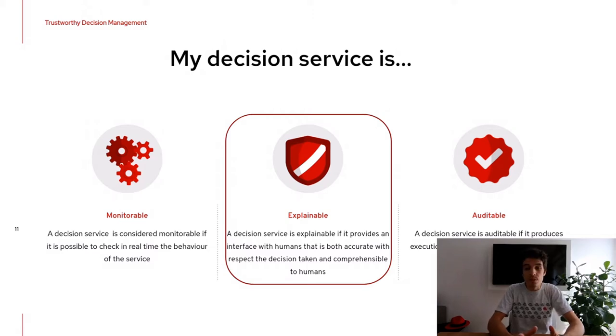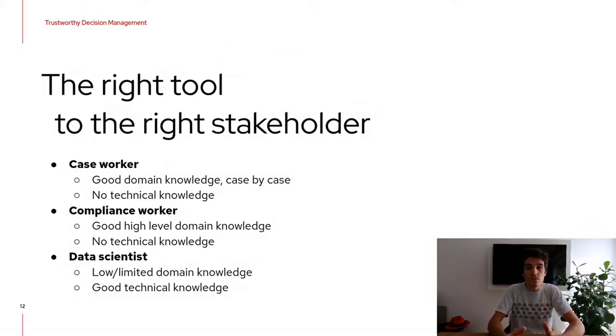Since we are dealing with decision models and in particular machine learning for business automation, it is necessary now that decision services are monitorable, auditable, and explainable. Usually there are different personas involved in business automation. For example, we might have data scientists that have very good technical knowledge but might have limited knowledge on the business domain. On the other side, we have the business analyst who has very good knowledge of the use case but maybe doesn't have that good knowledge of the machine learning model or technical knowledge. Of course this is not always true, but in general it is.